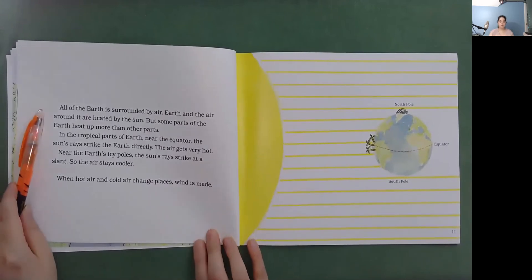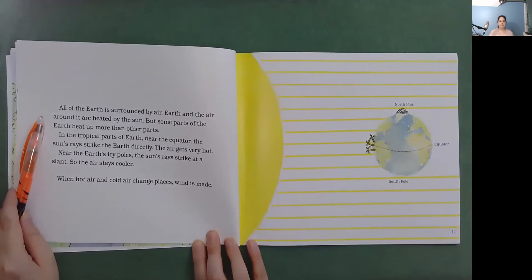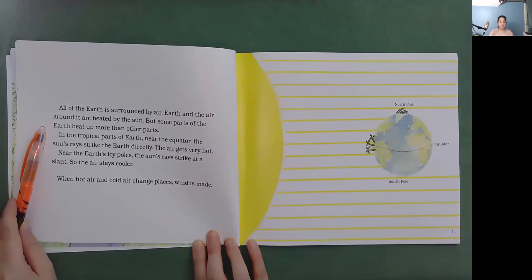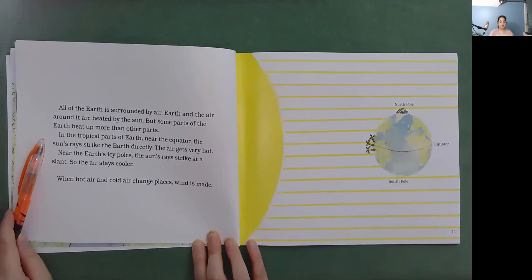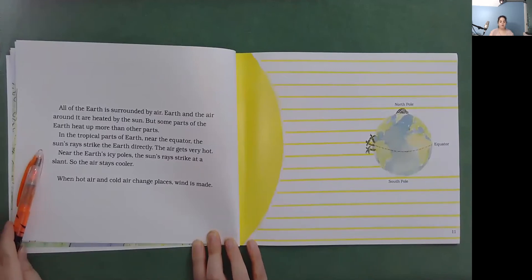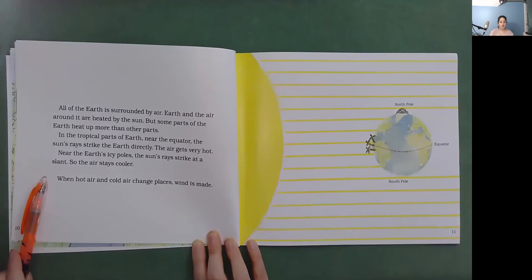All of the earth is surrounded by air. Air and earth and the air around it are heated by the sun. But some parts of the earth heat up more than other parts. In the tropical parts of earth, near the equator, the sun's rays strike the earth directly. The air gets very hot. Near the earth's icy poles, the sun's rays strike at a slant, so the air stays cooler. When hot air and cold air change places, wind is made.